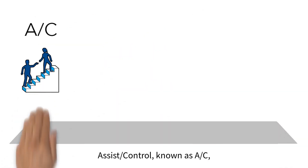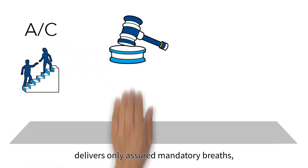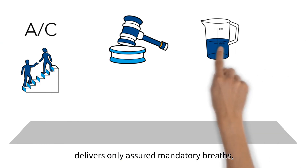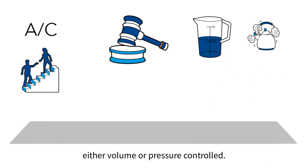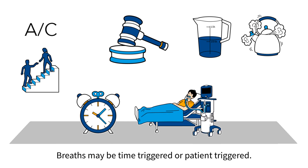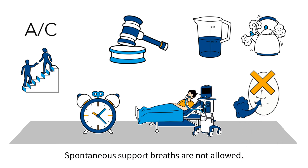Assist Control, known as AC, delivers only assured mandatory breaths, either volume or pressure controlled. Breaths may be time-triggered or patient-triggered. Spontaneous support breaths are not allowed.